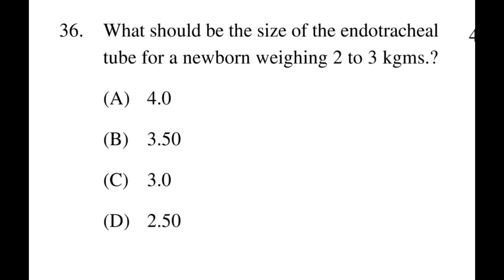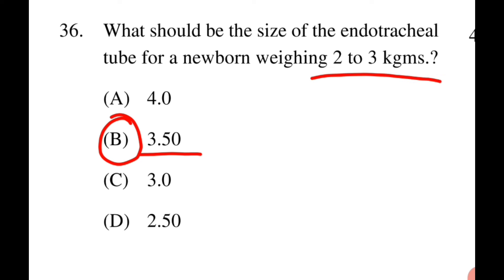Next question: What should be the size of endotracheal tube for a newborn weighing 2–3 kg? Options: A: 4.0, B: 3.5, C: 3.0, D: 2.5. The right answer is B, 3.5. For a 2–3 kg baby, a 3.5 ET tube is used. Usually the pediatrician makes the choice, but typically 3.5 ET tube is used.